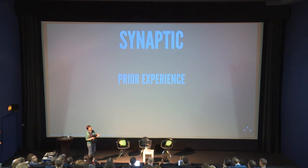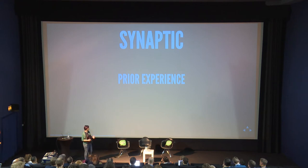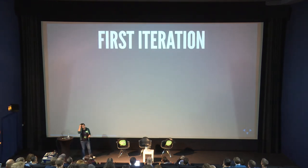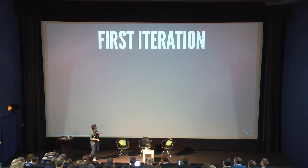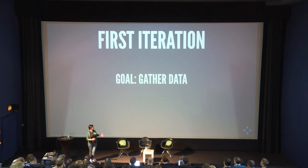The way I like to work is in small steps and iterations because it's easier to check whether something was a good idea or not, and it's not as much work. In the first iteration, my first goal was to gather data — because you need data to train your neural network.